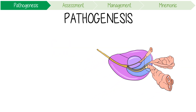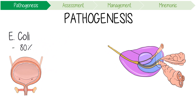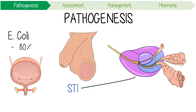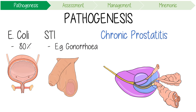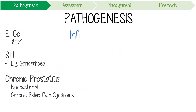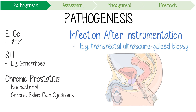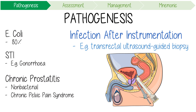The pathogenesis of prostatitis commonly involves the spreading of bacteria from UTIs into the gland, with E. coli causing about 80% of cases. In rarer instances, prostatitis is a complication of sexually transmitted infections like gonorrhea. Chronic prostatitis can also be due to non-bacterial causes like chronic pelvic pain syndrome. Notably, acute infection following instrumentation from things like transrectal ultrasound guided biopsy of the prostate is often associated with sepsis and multidrug resistant infection.